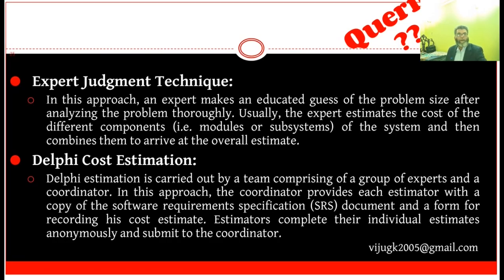The second method is Delphi cost estimation. Delphi estimation is carried out by a team comprising a group of experts and a coordinator. The coordinator provides each estimator with a copy of the software requirement specifications document and a form for recording their cost estimate. Estimators complete their individual estimates anonymously and submit them to the coordinator. The project specifications are allotted to the experts and they convey their views or opinions about the same.